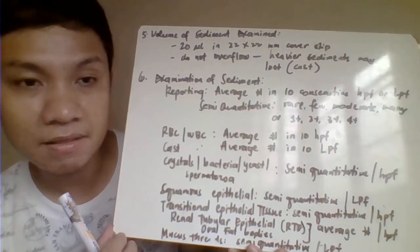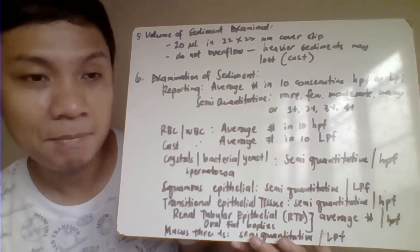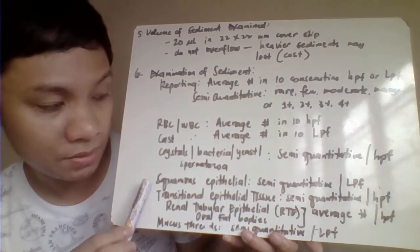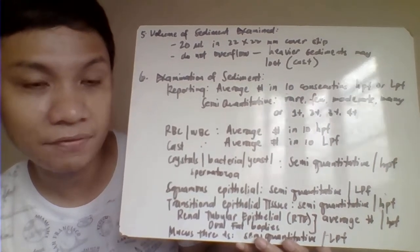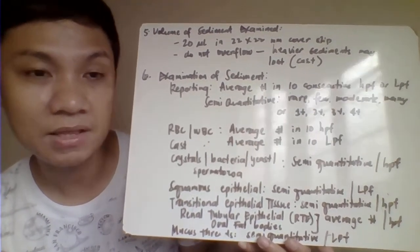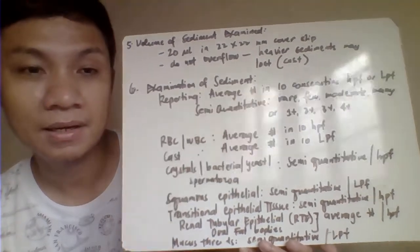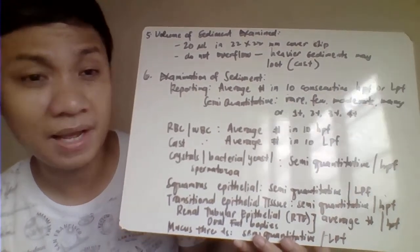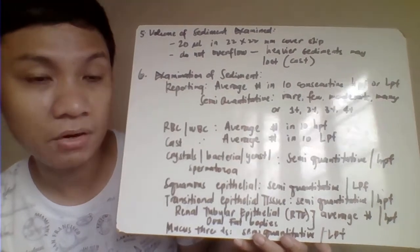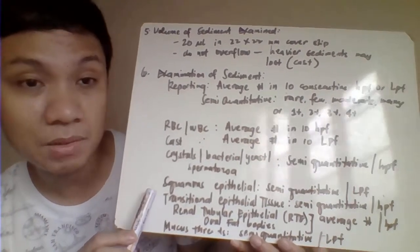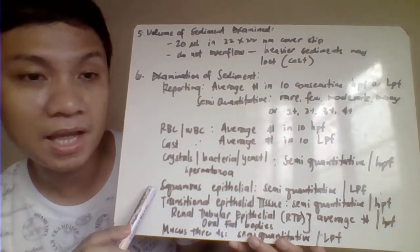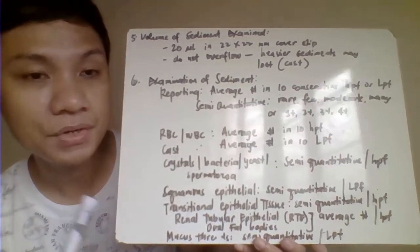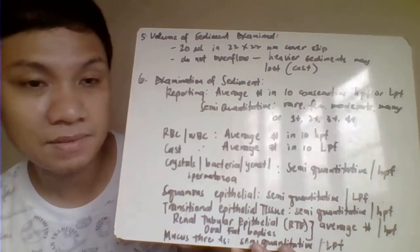For microscopic identification, you start with the scanner objective and look for squamous epithelial tissues. The squamous epithelial tissue is your basis for confirming that you are in the correct plane or dimension under the microscope. Once you see it, shift to the LPO (low power objective) and then to the HPO (high power objective) in order to ascertain the entire range of sediments present in your urine sample.